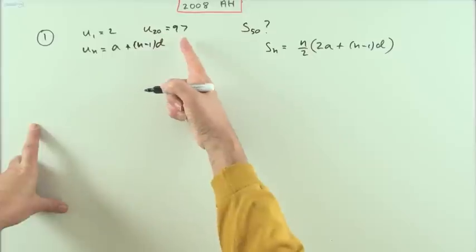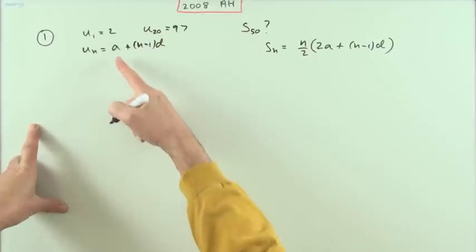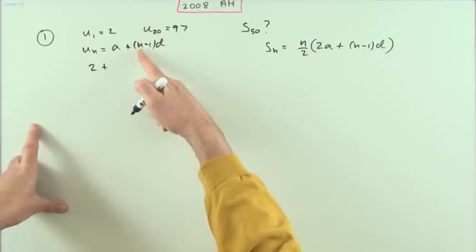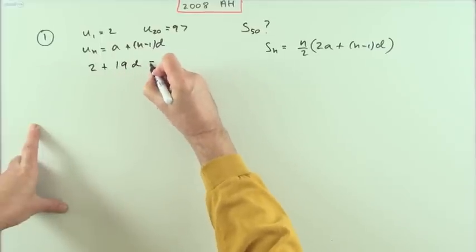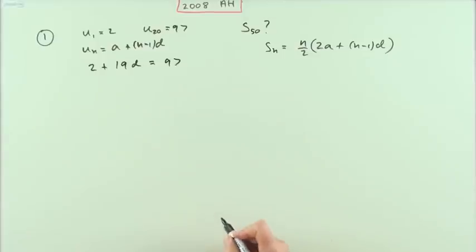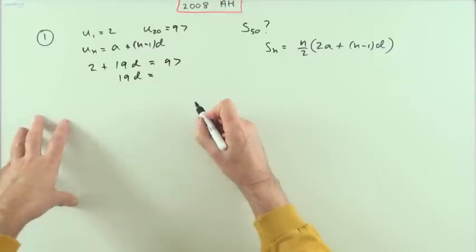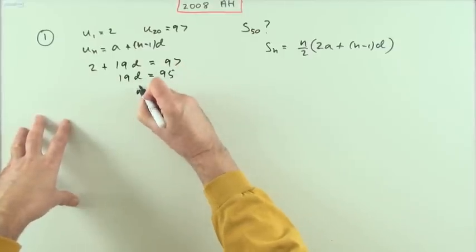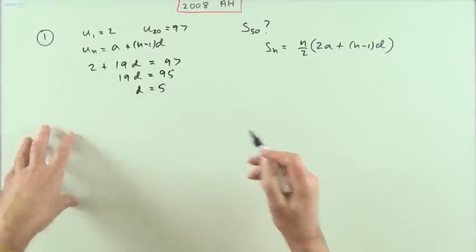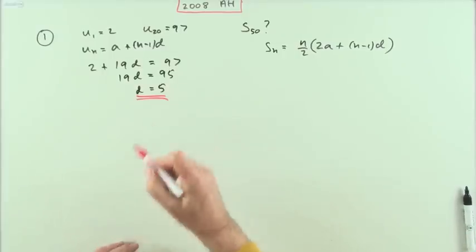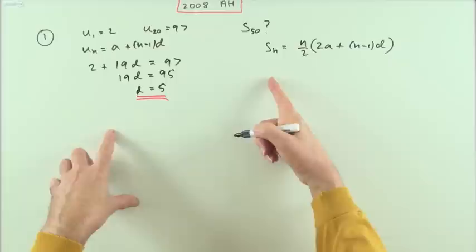Let's put these numbers in. For the 20th term, the answer is 97. So when a is 2 and n is 20, that means there's 19 lots of the difference. The answer comes to 97, so 2 plus 19d equals 97. That'll be 19d equals 95. That's easy then - d is 5.